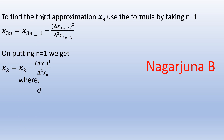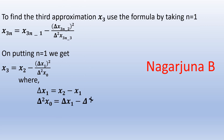Where Δx₁ = x₂ − x₁, which is called the finite first difference, and Δ²x₀ = Δx₁ − Δx₀, which is called the finite second difference. These values are calculated using a table, which will be explained in the example problem solved by Aitken's method.